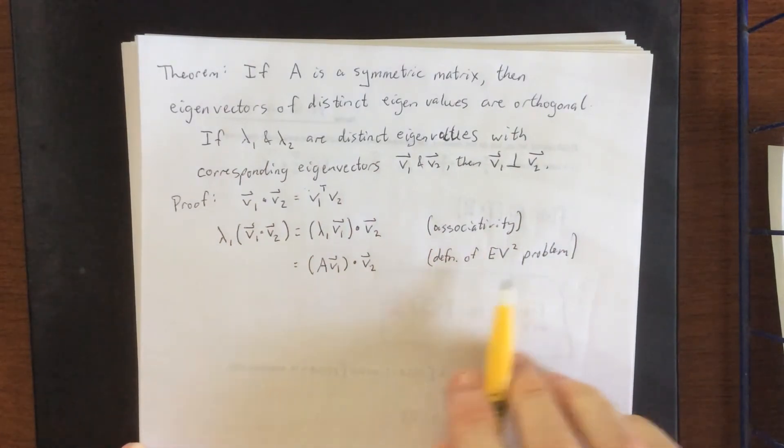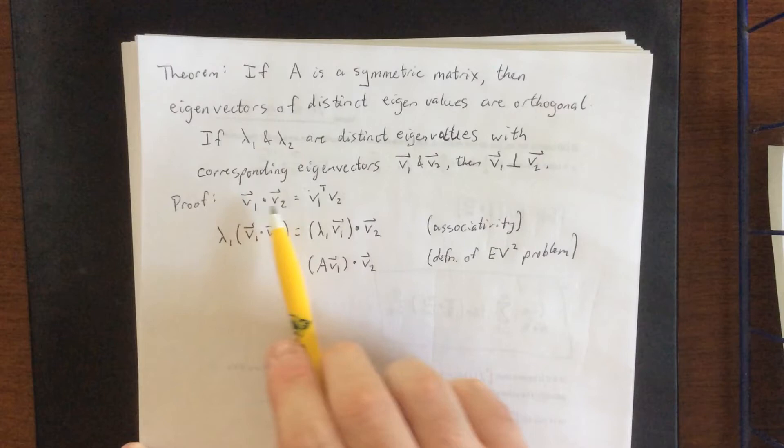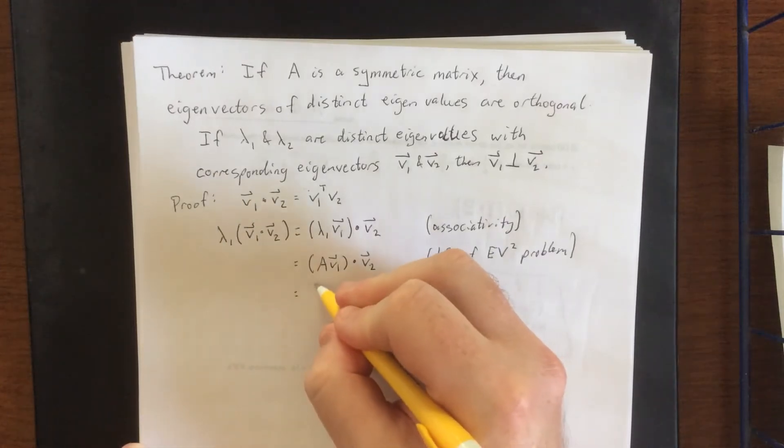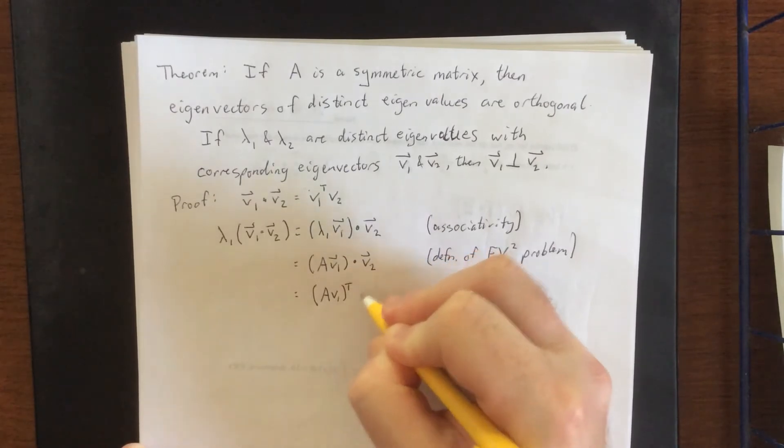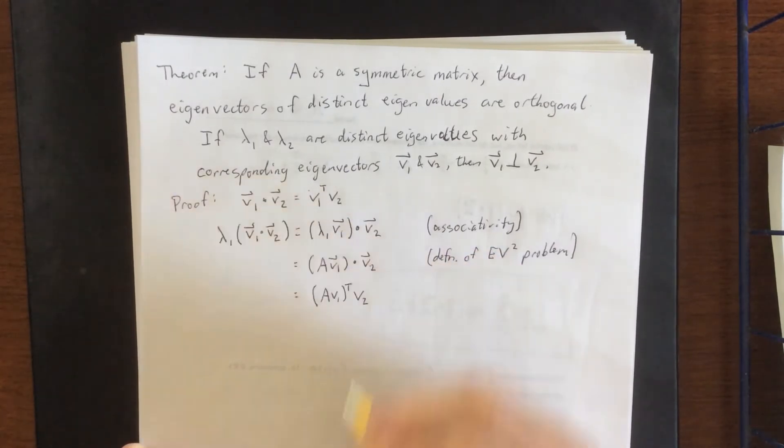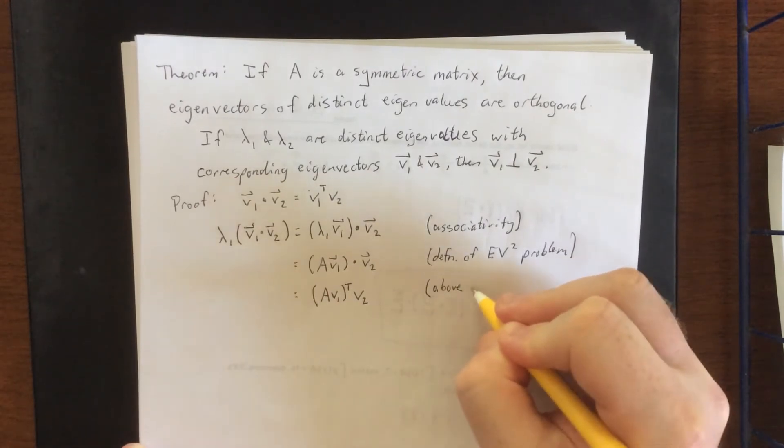Eigenvector eigenvalue, EV squared. Get it? That's funny. Next we're going to make use of this property up here that says when you dot two things together, it's the same as doing a matrix multiplication. So this is the same as saying matrix multiplication A V1 transpose times vector V2. And that's using the above property.